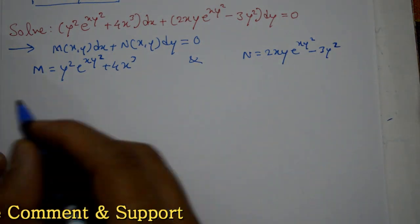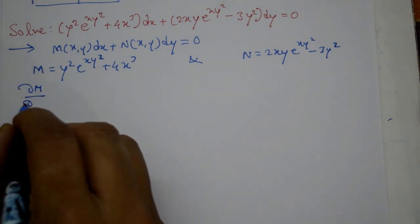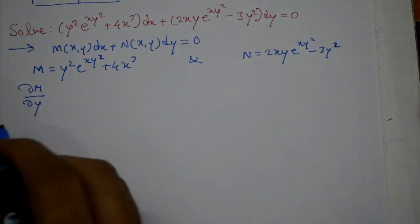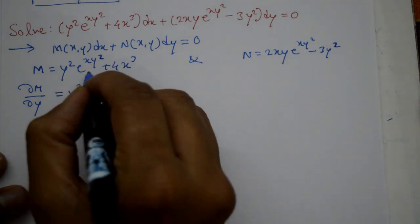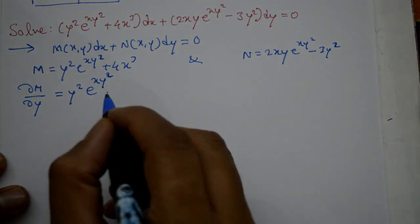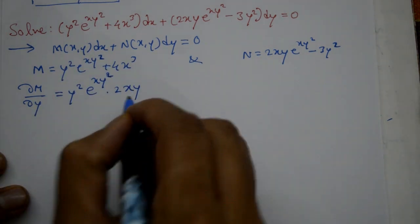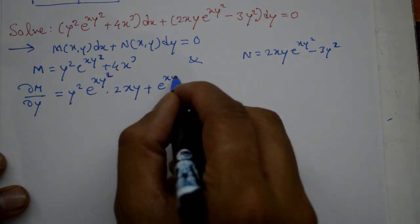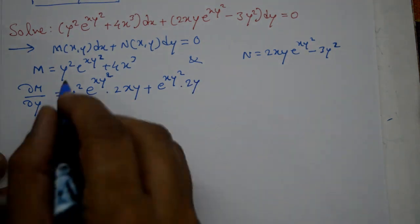M aur N ko differentiate karenge, partial differential use karke. Differentiate M with respect to y karenge — x is treated as a constant. Product rule apply karenge: y² as it is, isko differentiate karenge e^(xy²), baad me x y² karenge — x as it is, y² differentiate ho ke 2y ho gaya.